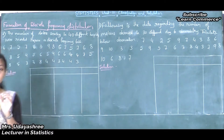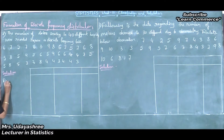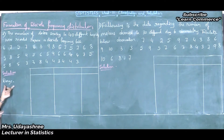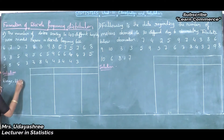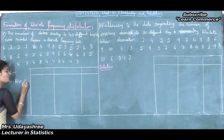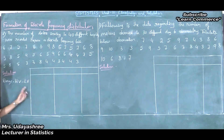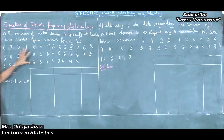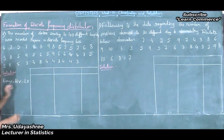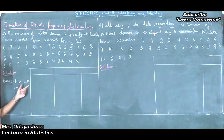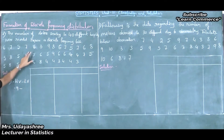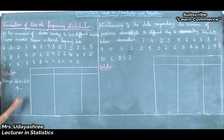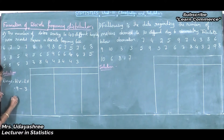Before that, I will find the range. The range formula we discussed in the previous class is: Range = Highest Value (HV) minus Lowest Value (LV). In this problem, the highest value is 9 and the lowest value is 3. So, 9 minus 3 equals 6. Here the range is 6.